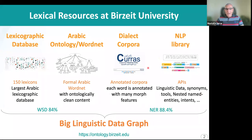Before starting, I would like to mention that in our research group at Birzet University, we have released several lexical resources which are available online, including the Arabic Ontology or WordNet, a very large lexical lexicographic database, in addition to several dialects morphologically annotated corpora, and a large set of lexical APIs to provide access to our dataset and services, such as word sense disambiguation and nested named entity recognition for Arabic.